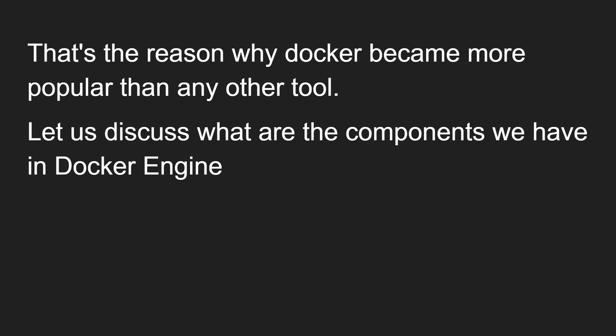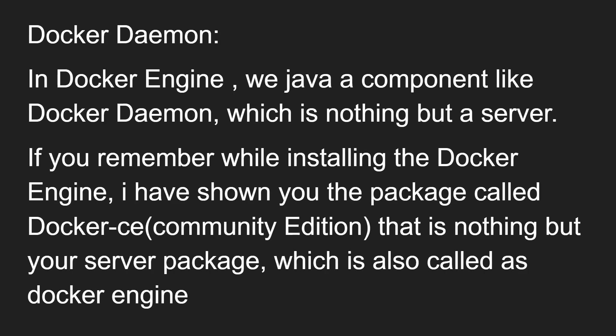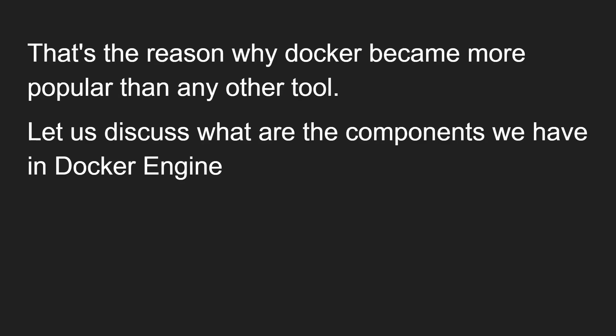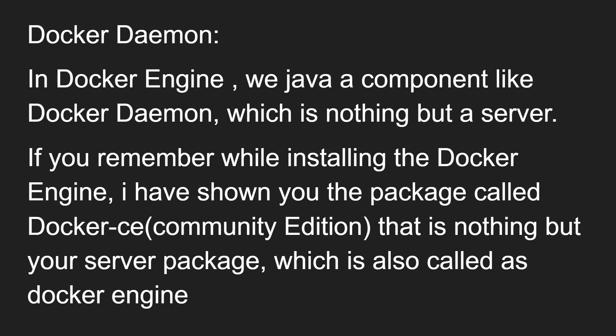That is the reason why Docker became more popular than any other tool — because Docker is cross-platform. Now let us discuss what are the components we have in the Docker engine. When talking about the Docker server or Docker engine, both are one and the same. The first component is the Docker daemon, which is nothing but a server. If you remember while installing the Docker engine, the package was called Docker CE — Community Edition — that is your server package, also called the Docker engine. So this is the Docker daemon.